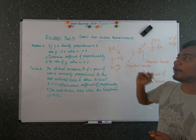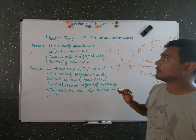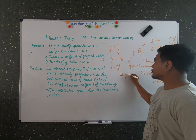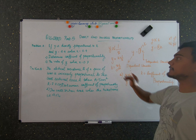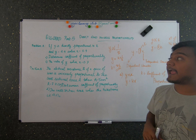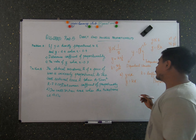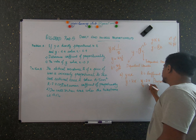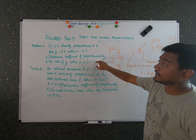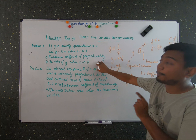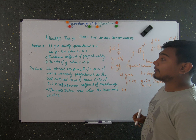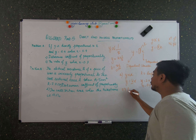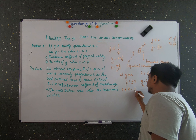First let's read problem number A. If y is directly proportional to x, and y is equal to 2.4 when x is equal to 0.4, we need to determine the coefficient of proportionality. Since y is directly proportional to x, we know y is equal to kx. To find the coefficient of proportionality, k is equal to y divided by x.